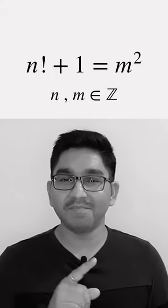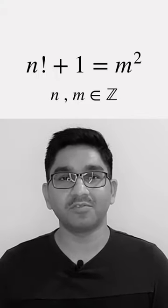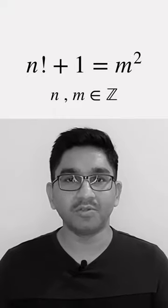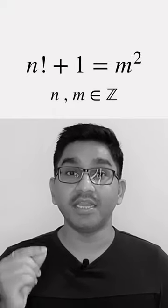Hello friends. If I tell you, how many solutions are simple looking equations? n factorial plus 1 equal to m square, where n and m are integers.